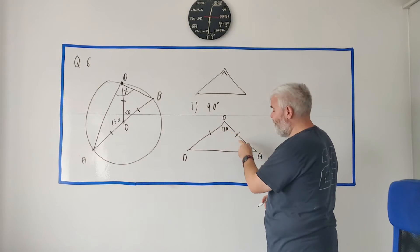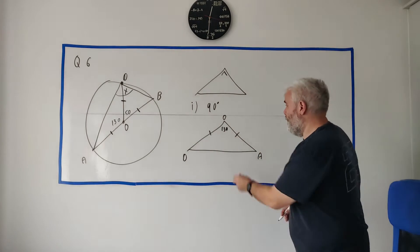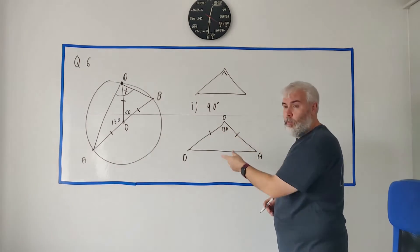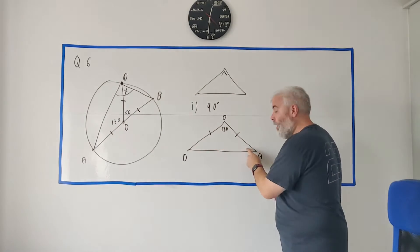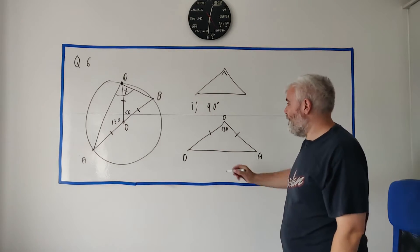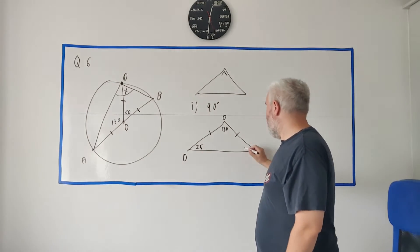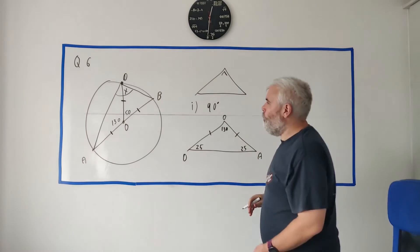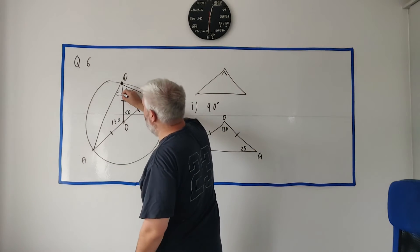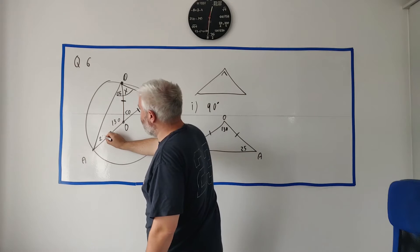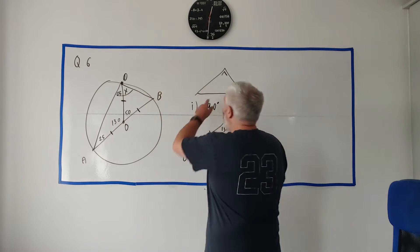So if this is an isosceles triangle, this and this must equal each other, and they must add up to get 50, because they have to add together with 130 to get 180. So what's missing from 130 to 180? 50. These two have to add to 50, and they have to be the same, so they have to be 25.